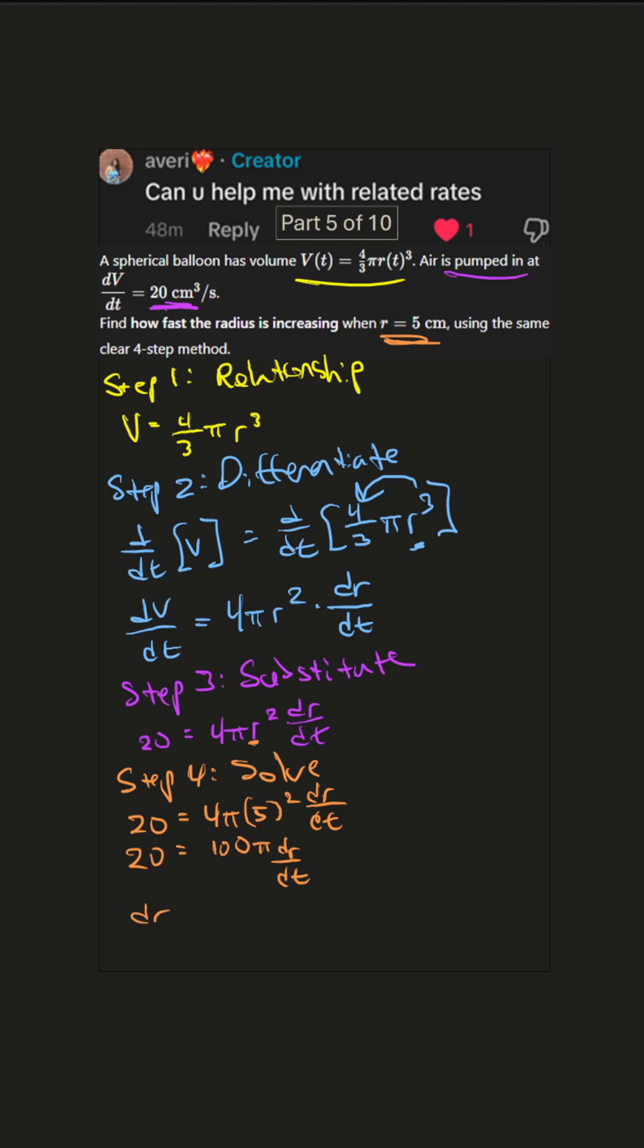And we'll see dr dt equals 1 over 5 pi centimeters per second. So at that instant, the balloon's radius is increasing at 1 over 5 pi centimeters per second. Hope that helps. Thanks for watching.